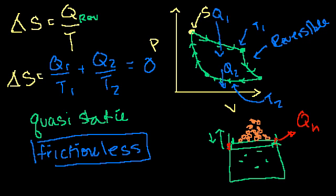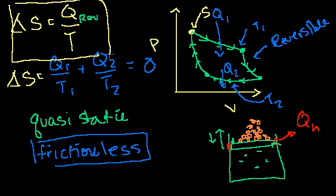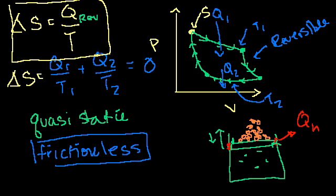With that said, the definition q/T happened to work because I was dealing with a reversible system. To drive the point home, let me show you that it would not have worked if I had defined it as q/T on an irreversible system. Let me draw another PV diagram for a very simple thought experiment with an irreversible system.